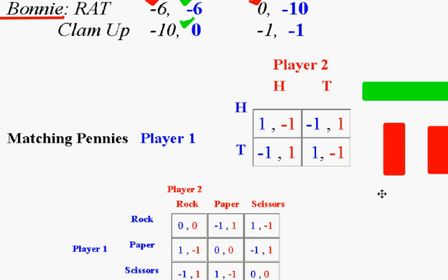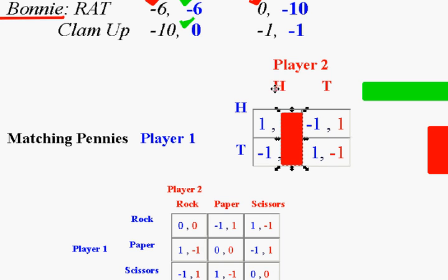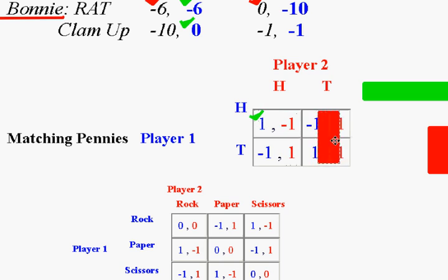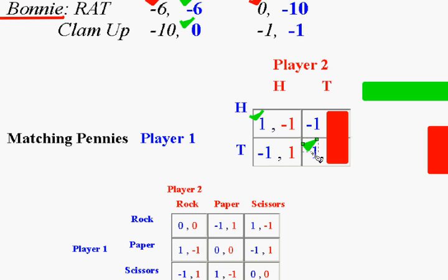Let's start with the dominant strategy idea. Player one, if you think player two is going to put down heads, what does player one want to do? Well player one would want to play heads because they're the evens player. Now if player one thought player two was going to put down tails, what does player one want to do? Player one would then want to put down tails. So player one has one check mark on heads and one on tails, meaning player one doesn't have one best choice always — that's what a dominant strategy requires.